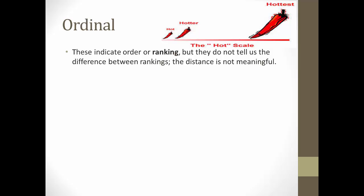Now, the next step up is an ordinal variable. These indicate order or ranking, but they do not tell us the difference between the rankings. The distance is not meaningful. If you look at this little example up here, hot, hotter, and then hottest. You can tell there's a huge jump between hotter and hottest. This is kind of the idea. There's not intervals between these that are equal.